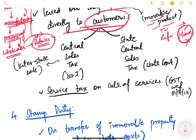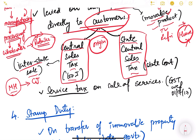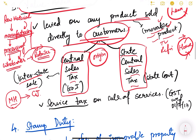Previously there were two types: state VAT levied by the state government, and central sales tax levied by the central government. Central sales tax was imposed on interstate sales — for example, if goods are sold from Maharashtra to Gujarat, the central sales tax is imposed by the central government. It was a kind of origin-based tax, meaning tax was paid in the state where the sale happened, such as Maharashtra.